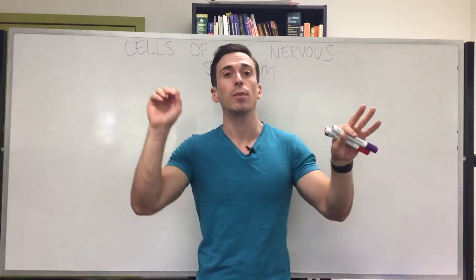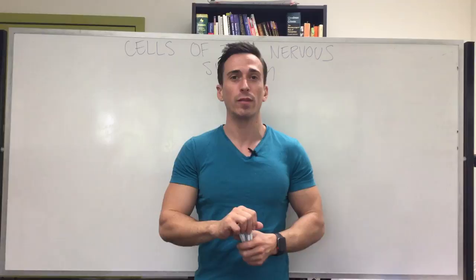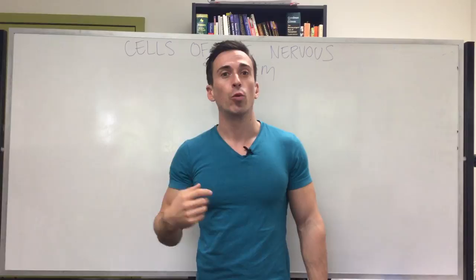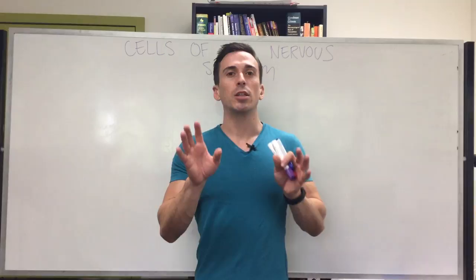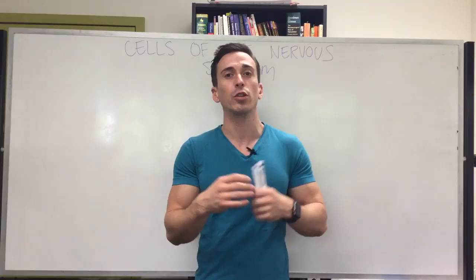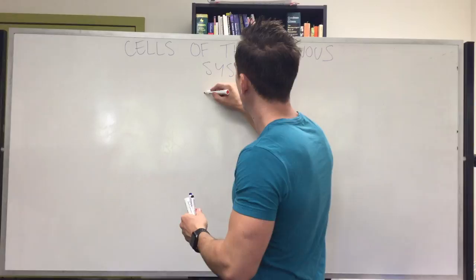The one cell type that is nearly indistinguishable between the two divisions are the neurons, so neurons will be found everywhere within the central nervous system. Even just the brain has about 100 billion neurons. Within the spinal cord there's going to be about 100 to 200 million neurons. Even in the gut there's actually about half a billion neurons as well, so neurons are all over the place.